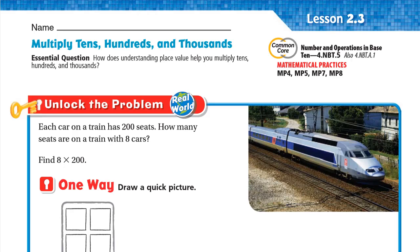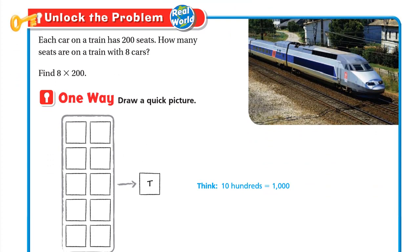Hello, this is Mr. Ahmad, and today we'll do lesson 2.3: Multiply Tens, Hundreds, and Thousands. Our essential question is: how does understanding place value help you multiply tens, hundreds, and thousands? Let's unlock the problem — each car on a train has 200 seats.